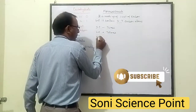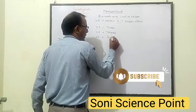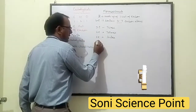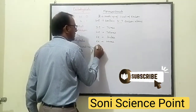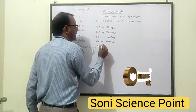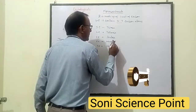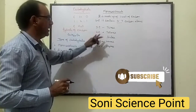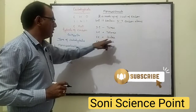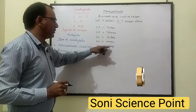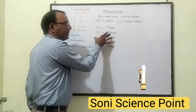Five Carbon molecules in a Monosaccharide is known as Pentose, six Carbon molecules is known as Hexose, and seven Carbon molecules is called Heptose. So on the basis of carbon atoms present, the Monosaccharides are Triose, Tetrose, Pentose, Hexose, and Heptose.